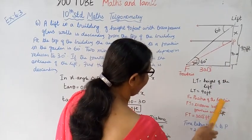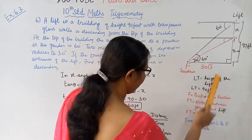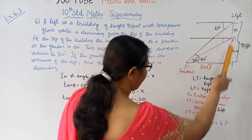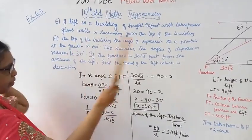F is the position of the fountain. The distance between the fountain and the lift is 30 root 3. Time taken is 2 minutes. Now let me solve this.